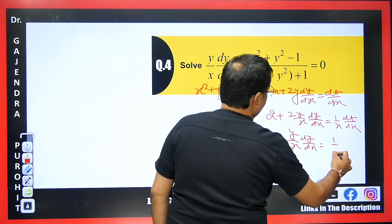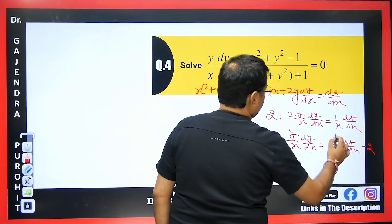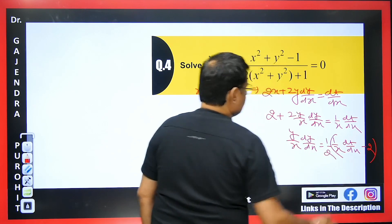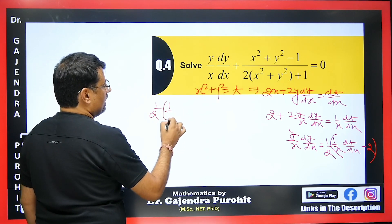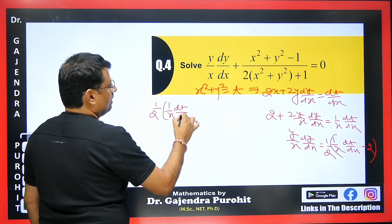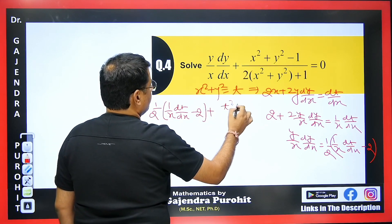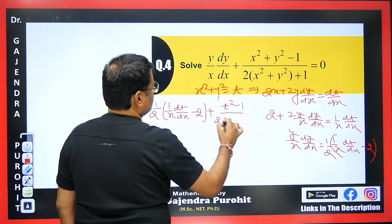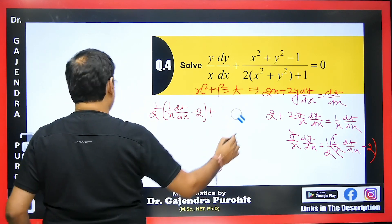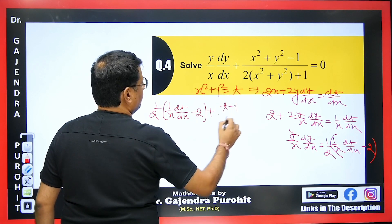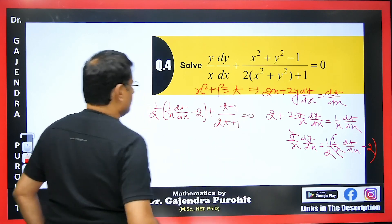Substituting this value into the given expression and simplifying, we obtain: (1/2x) dt/dx + terms involving t. After moving terms to the other side and computing: (1/2x) dt/dx = (t+2)/(2t+1). Some algebra is needed here — after careful simplification, we get this relation between t and x.